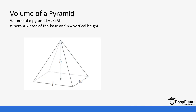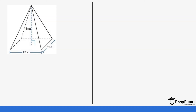The volume of a pyramid is calculated by one-third times base area times height. There's a tendency for students to forget the one-third. When you get the base area, make sure you multiply it by height but don't forget the one-third. Let's look at a few examples together.